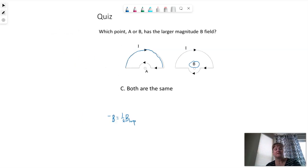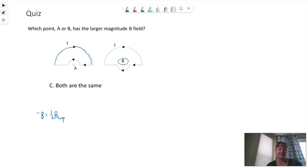Each semicircle is half of a loop, and we're also at the center of the loop. So Z would be equal to zero, which means we would have half of the mu naught I over 2R. That would determine the strength of the magnetic field of each semicircle.